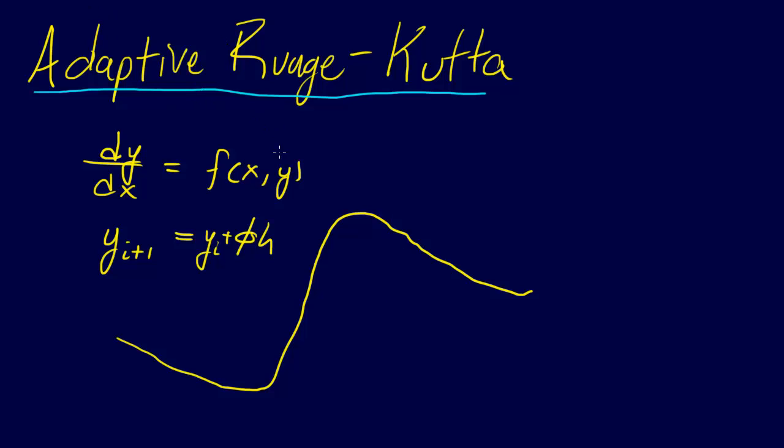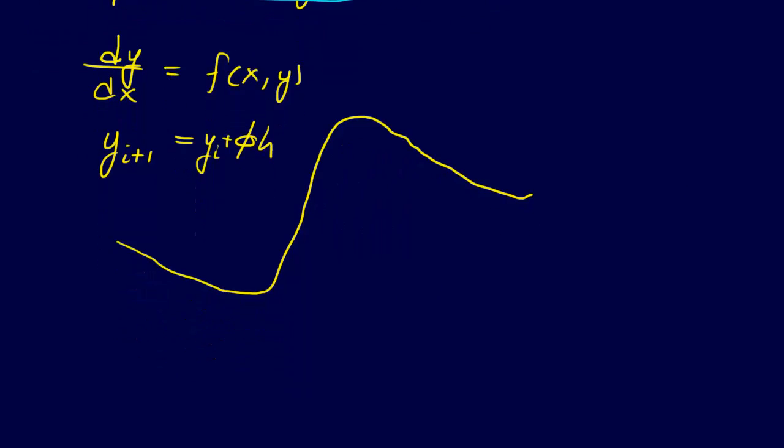And so they're called explicit Runge-Kutta methods because you can solve them directly. In other words, this y_{i+1} is y_i plus phi h and y_{i+1} only appears in the left hand side of the equations. On the other hand, an implicit equation would have y_{i+1} would also appear somewhere on this side of the equation.